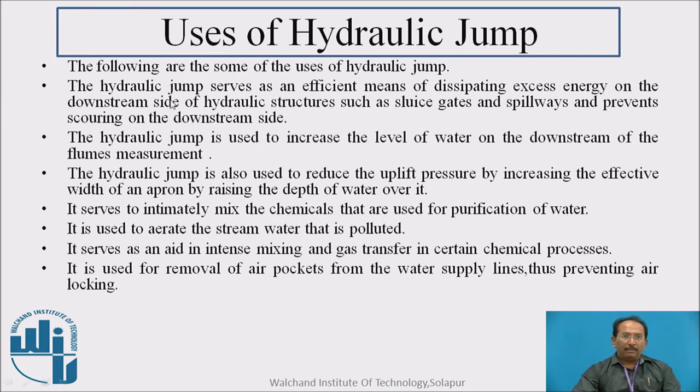Lastly, these are some of the uses. The hydraulic jump serves as an efficient means of dissipating excess energy. The hydraulic jump is used to increase the level of water in the downstream of the flumes measurement, that is in the flumes the area is contracted. The hydraulic jump is also used to reduce the uplift pressure by increasing the effective width of apron. It serves to intimately mix the chemicals that is in water purification. It is used to aerate the stream water that is polluted. And it serves as an aid in intense mixing and gas transfer in certain chemical processes. And lastly, it is used for removal of air pockets from the water supply lines, thus preventing air logging. So, these are some of the important uses of the hydraulic jump.